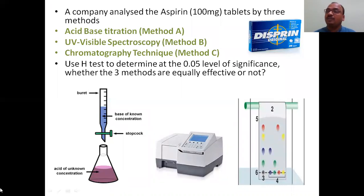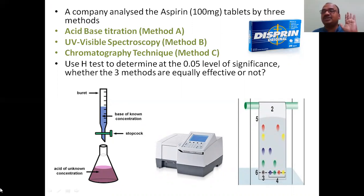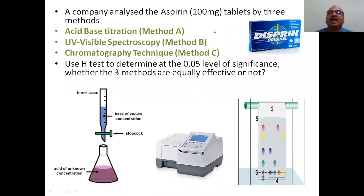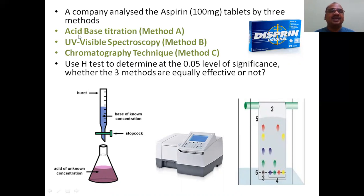Now we will go straight to the problem, and later we will see the procedure — in statistics, if you do a test example first, you automatically understand the procedure. A company analyzed aspirin tablets of 100 mg. Aspirin is a very popular drug — a popular brand is Disprin. They used three different analytical methods: Method A is acid-base titration, Method B is UV visible spectroscopy, and Method C is chromatography technique like paper chromatography, TLC, etc.